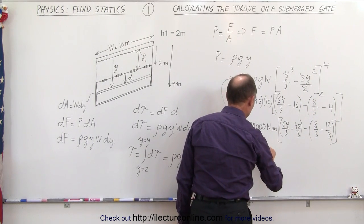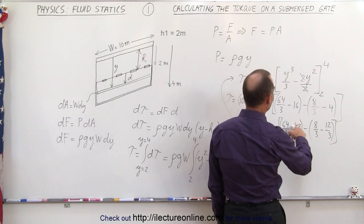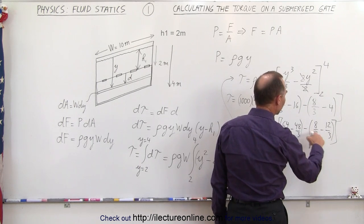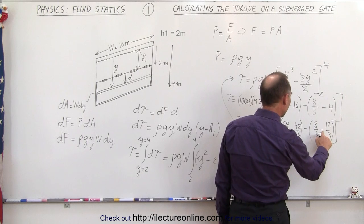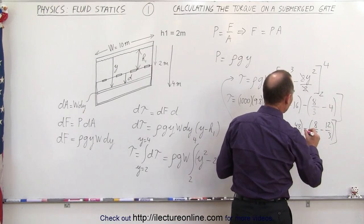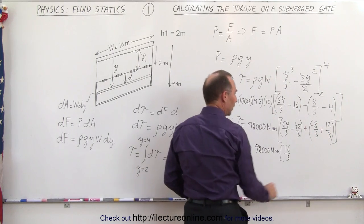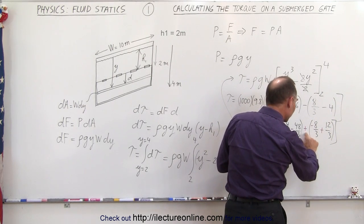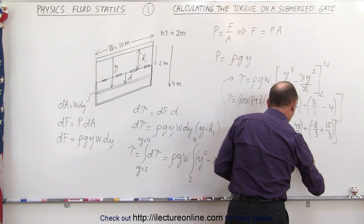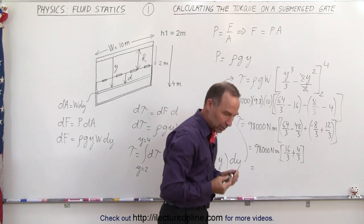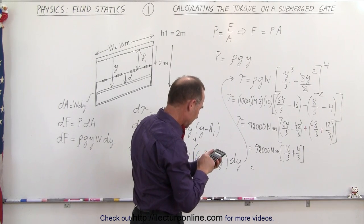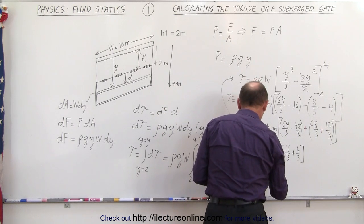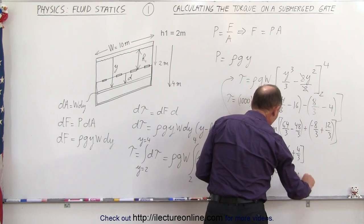So this becomes 98,000 Newton-meters times: upper limit gives 16 over 3, minus the lower limit result. Being careful with signs — subtracting (8/3 − 12/3) flips to 12 − 8 = 4 over 3, so we add 4 thirds, giving 16 over 3 plus 4 over 3 equals 20 thirds. Using a calculator: 20 divided by 3 times 98,000 gives us 653,000 Newton-meters of torque on that gate.